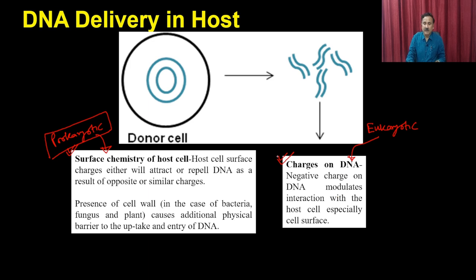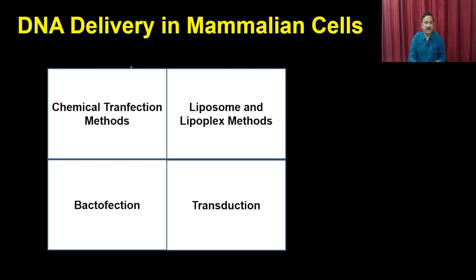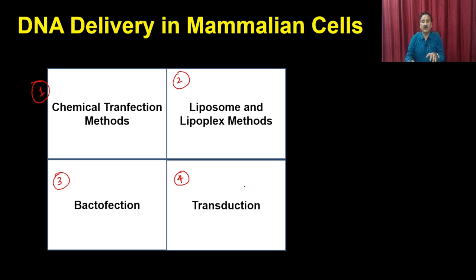There are multiple methods by which you can work on the charges on the DNA. There are four methods used for DNA delivery in mammalian cells: one is called the chemical transfection method, the second is the liposome or lipoplex method, the third is called bacteriofection, and the fourth is transduction. All of these methods work on the basic principle that you are going to modify the DNA in such a way that it is accepted by the cells.